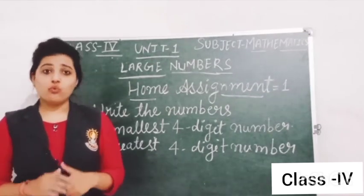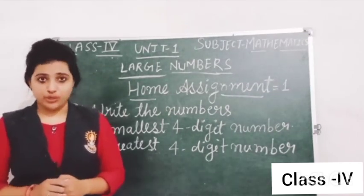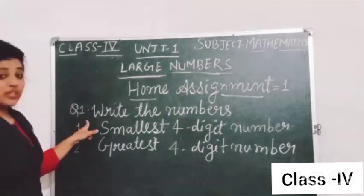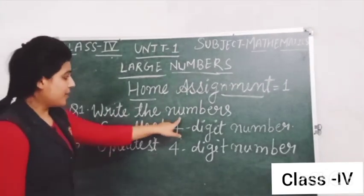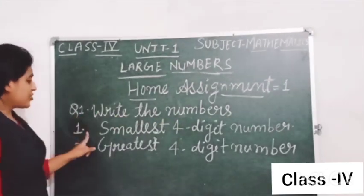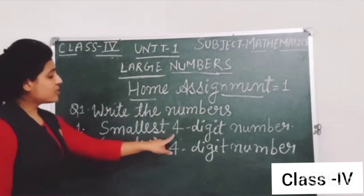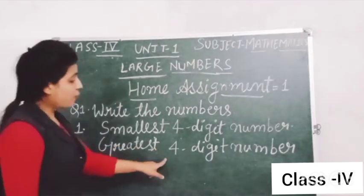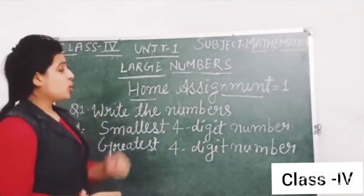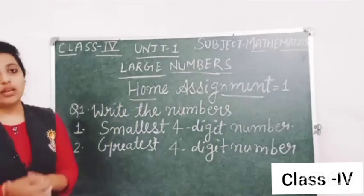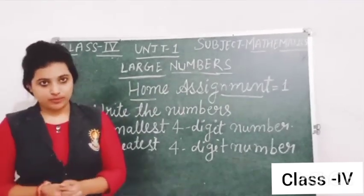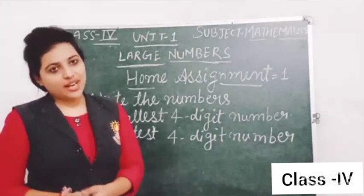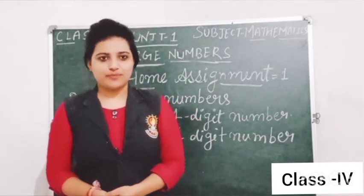Okay students, I hope you all understood what I taught you in this video. Your today's home assignment is question number 1: write the numbers — question 1 is the smallest 4-digit number and question 2 is the greatest 4-digit number. You have to do this home assignment in your homework notebook. We will continue this chapter in our next video. Thank you.